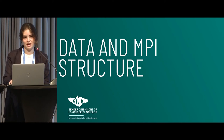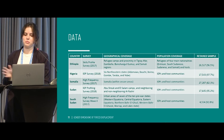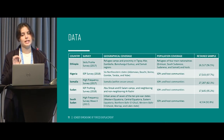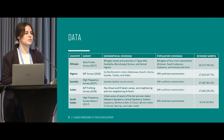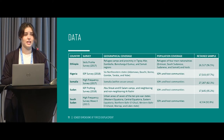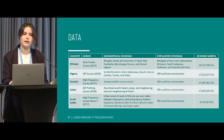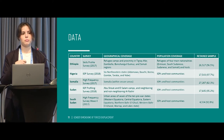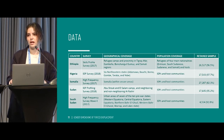Turning to our study's data and MPI structure: we're studying five countries. In Ethiopia and Sudan, we're actually studying two refugee populations, whereas the other three countries are focused more on internally displaced people. Also in Nigeria, it's the six northeastern states that we're looking at. We used these particular data because the sample design was representative for both IDPs and the host community, to allow that kind of comparative poverty analysis.